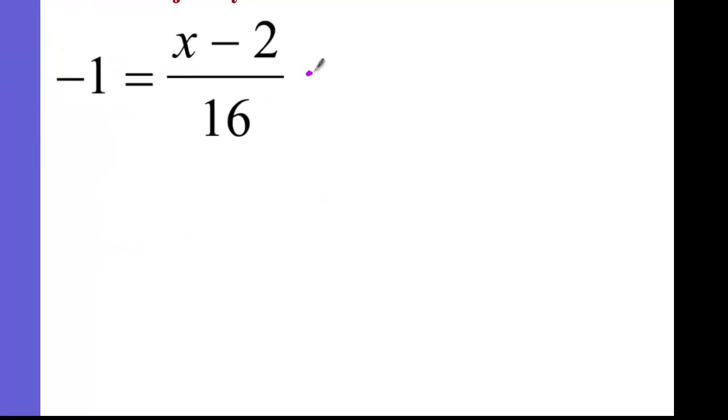And then multiply by 16 on both sides. So what happened to this 16 and this 16? Both of this cross out. Then you multiply this together. So this is?